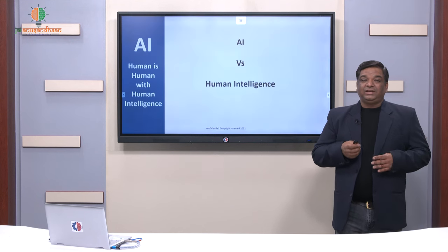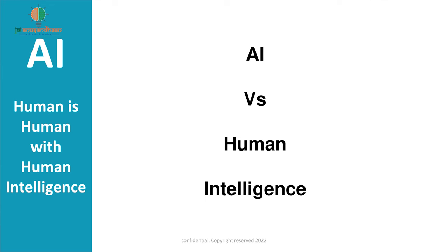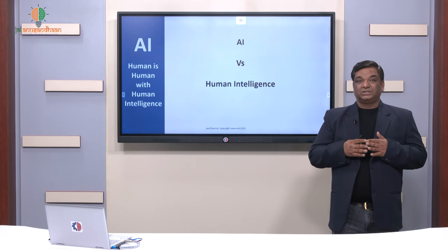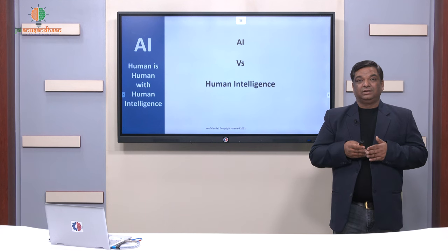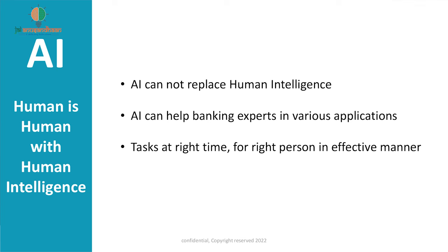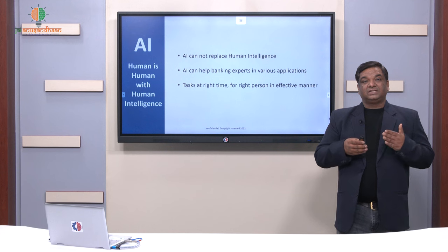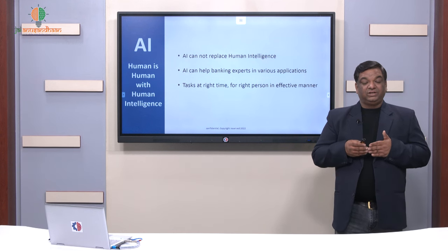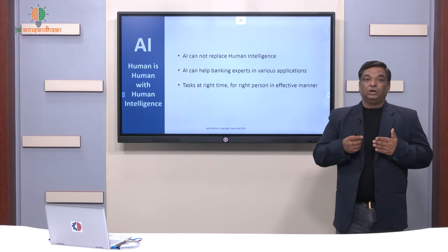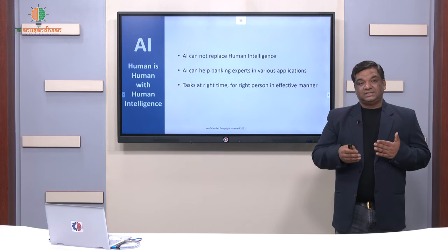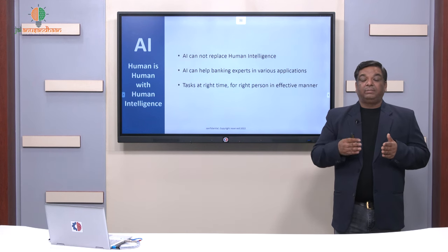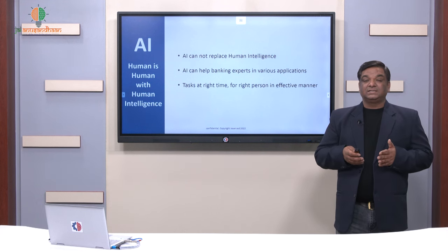Another topic that comes up in research, news, and media is AI versus human intelligence. Humans carry a human intelligence that is far beyond AI. Human is controlling AI, and with the right governance and right control, humans will continue to control AI. AI cannot replace human intelligence. AI will be a developed part operating within a control boundary. For example, in banking, AI cannot replace an expert — AI is a helping hand to enable an SME to perform tasks more effectively and handle more data-oriented decisions.